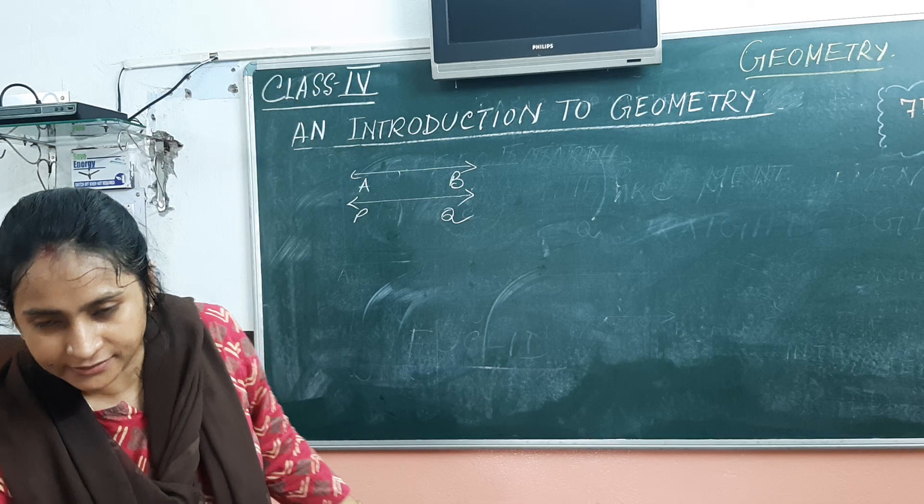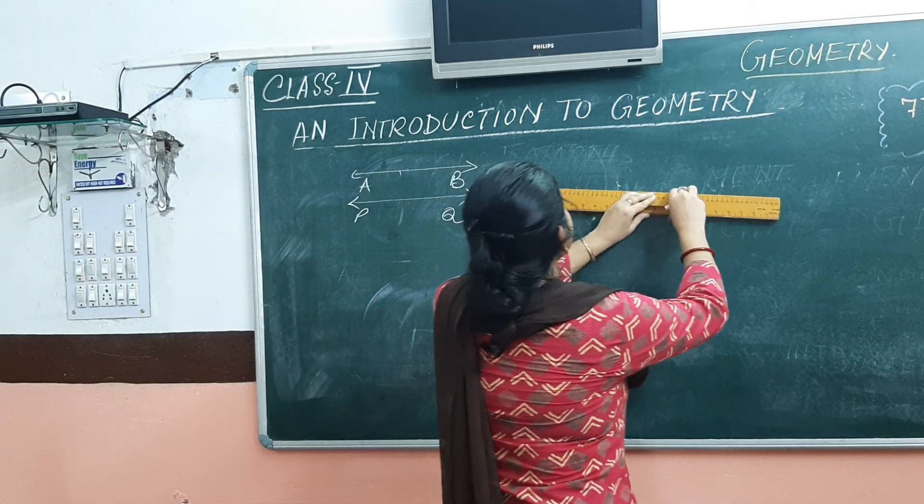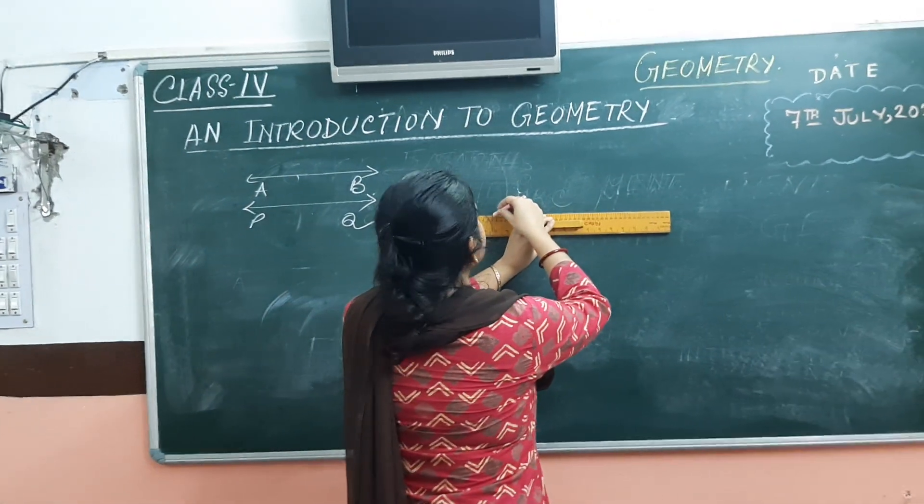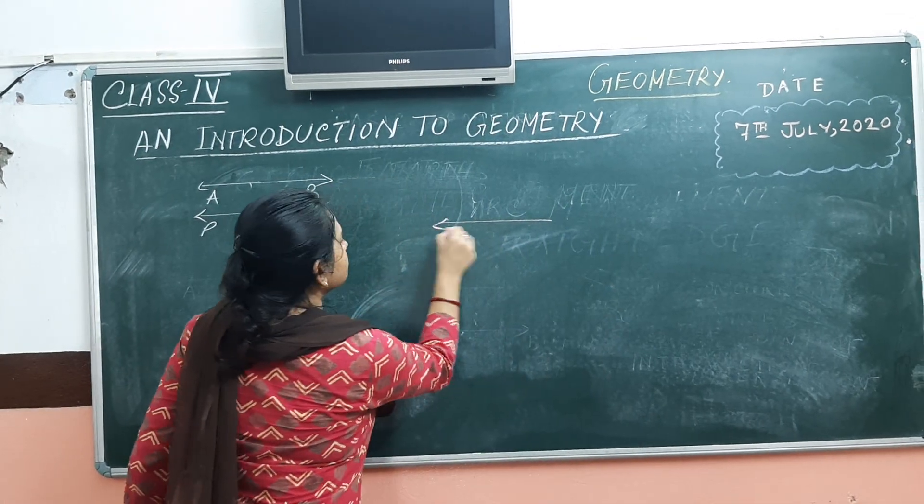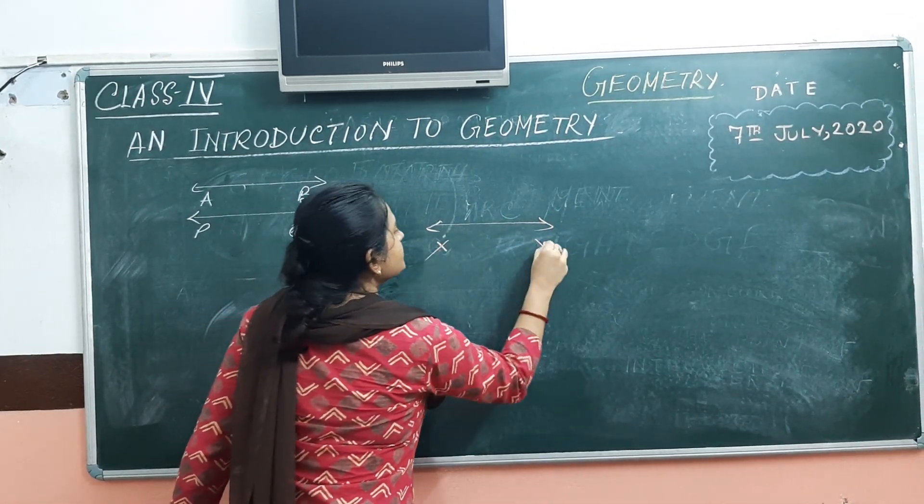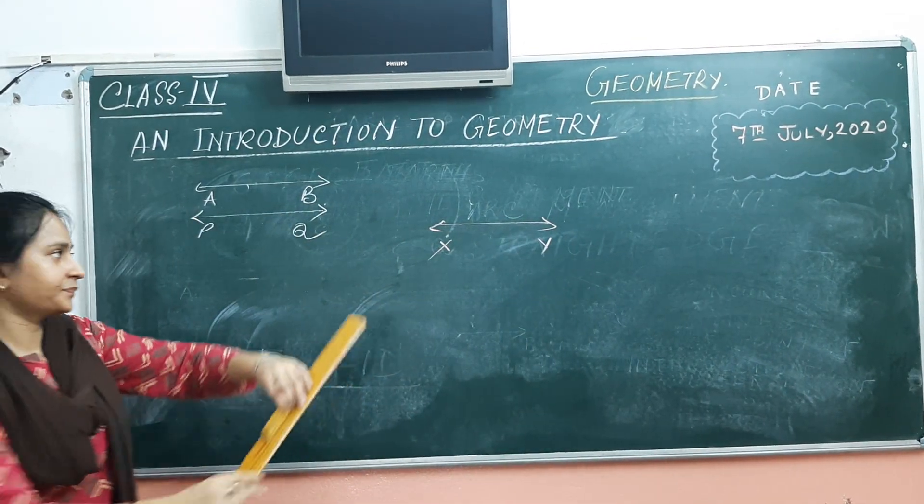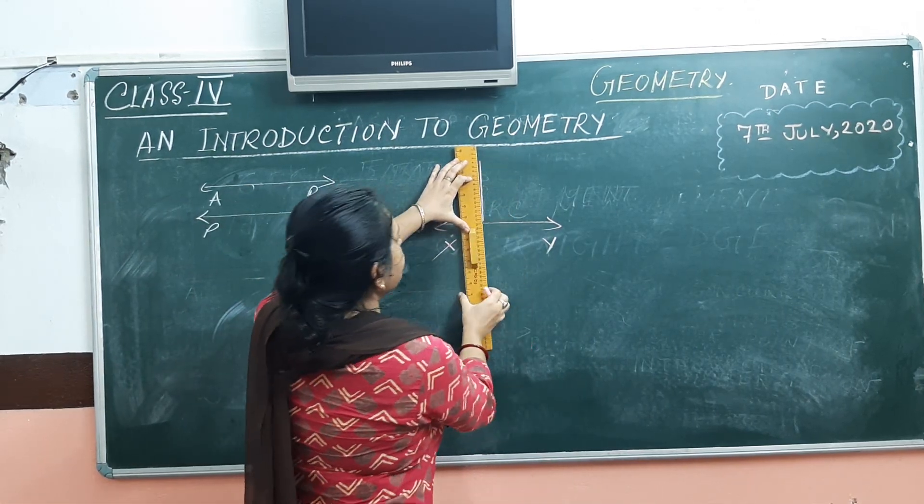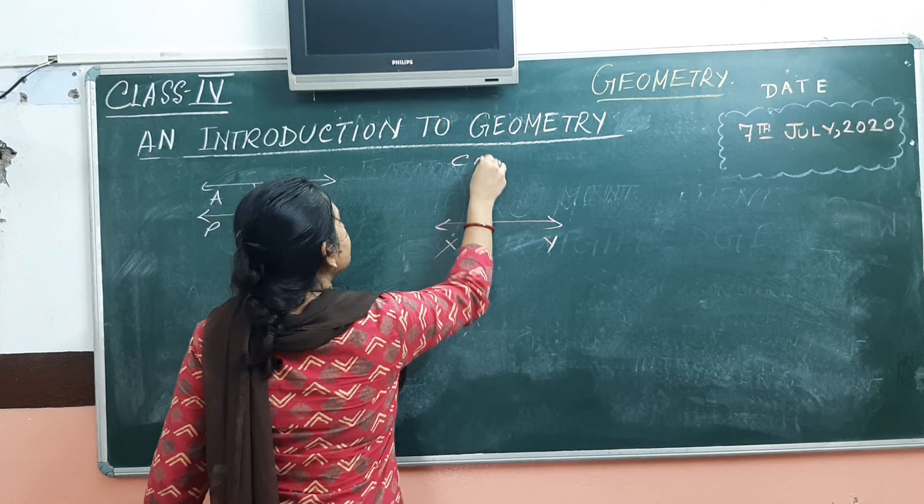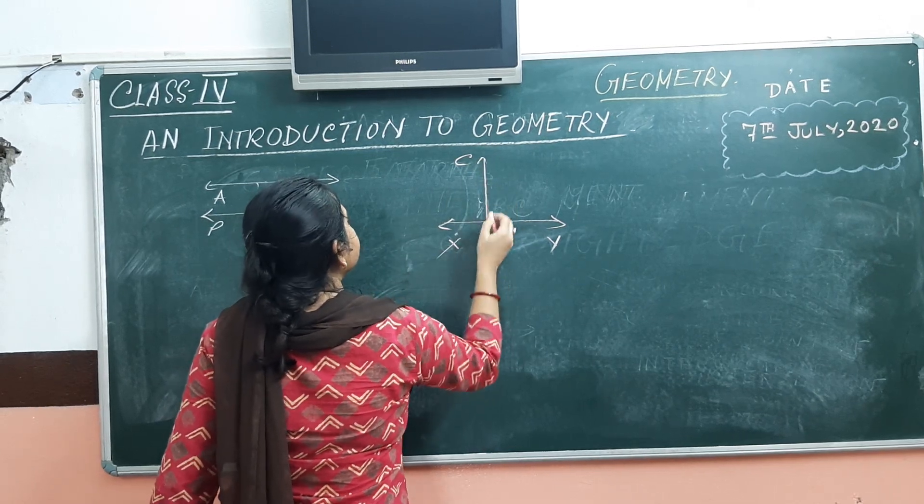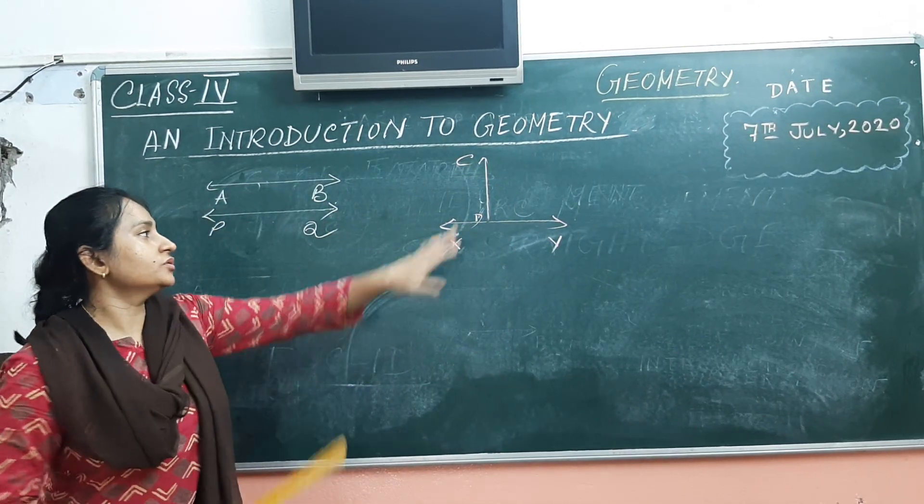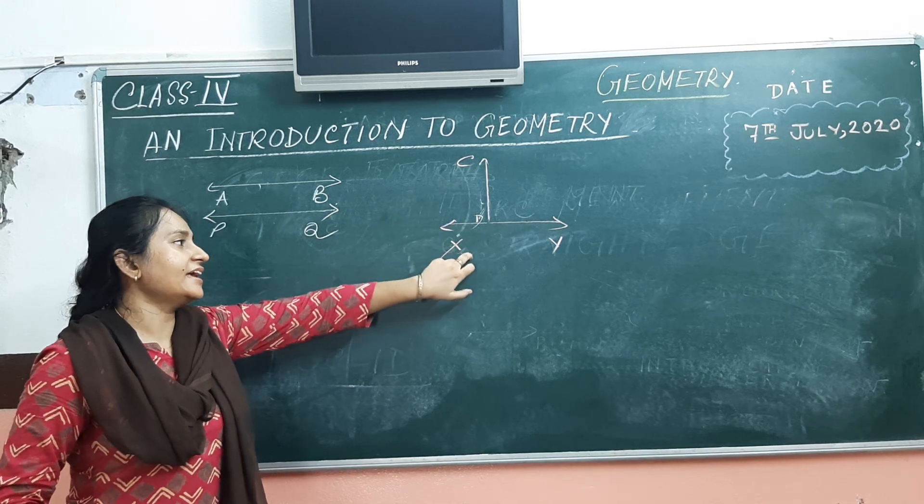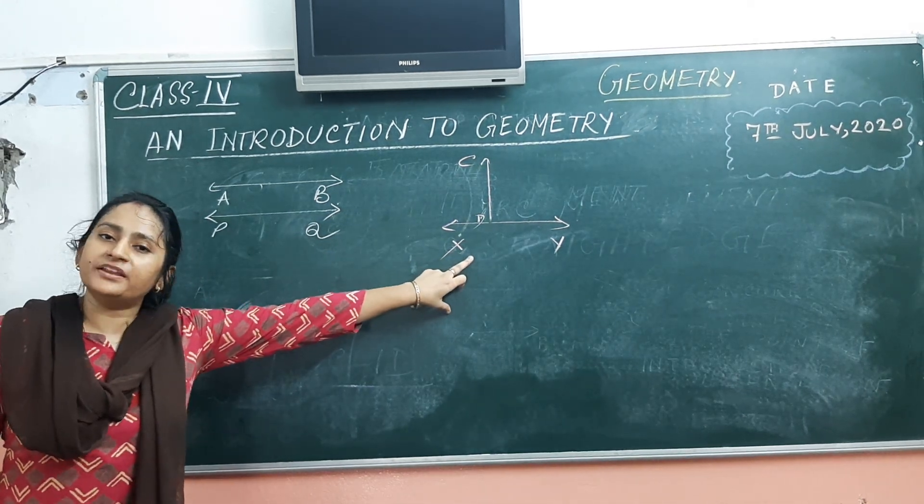what are perpendicular lines? Suppose, suppose this is line XY. Now we draw another line segment which is CD. So these two lines CD and XY, they are perpendicular lines.